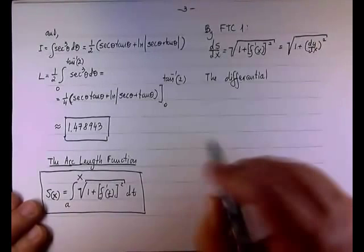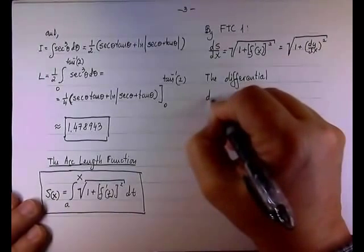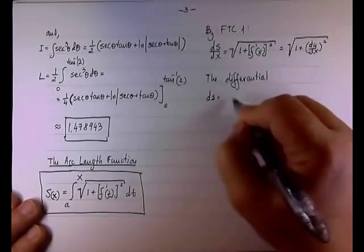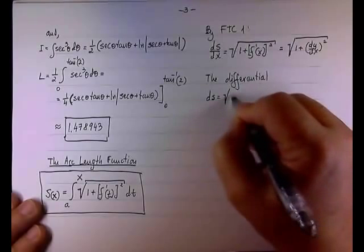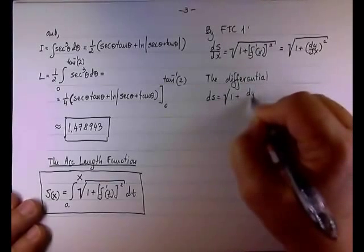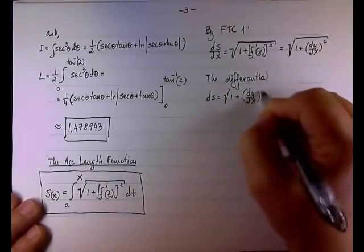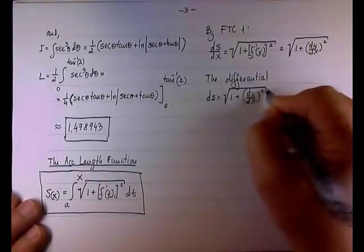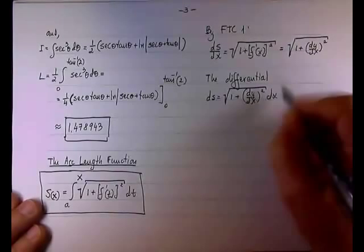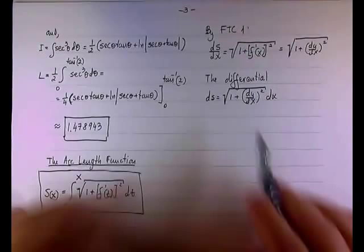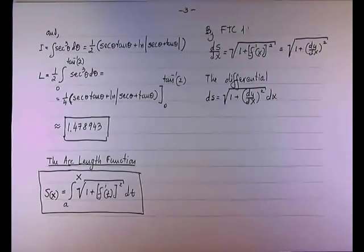will be the following. I want differential form, I'm interested in ds by itself, so ds by itself would be the square root of one plus dy dx squared, right, times dx.